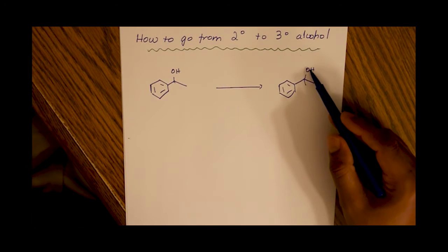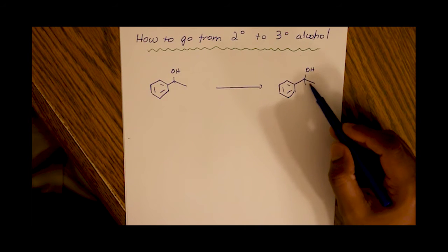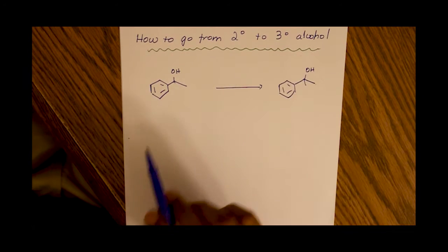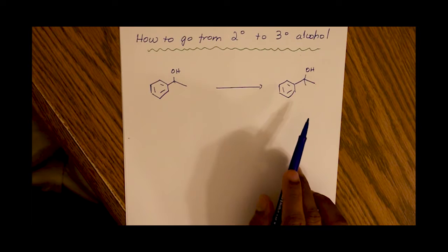And we have an OH bound to a carbon that's bound to three other carbons. So this is a tertiary alcohol. How do we go from a secondary to a tertiary alcohol?